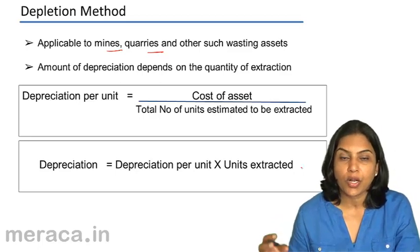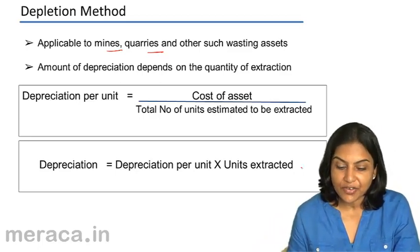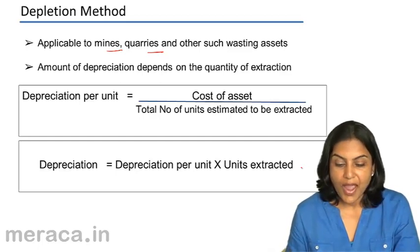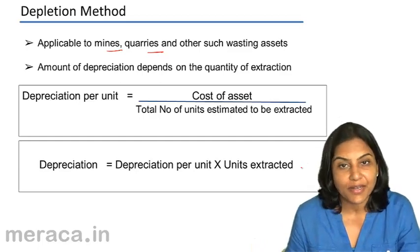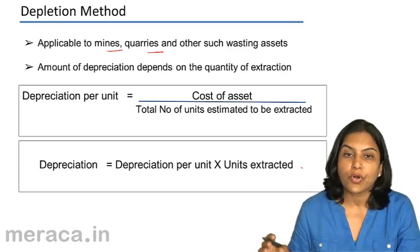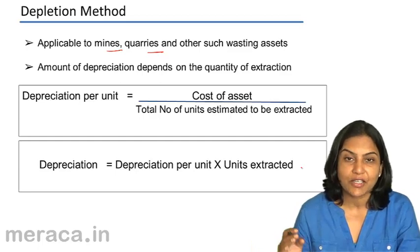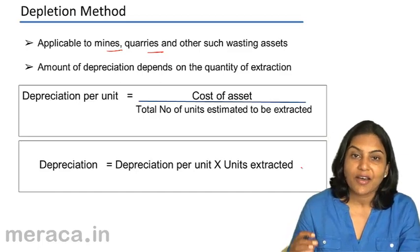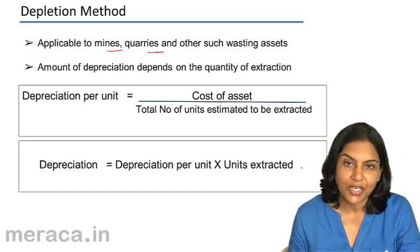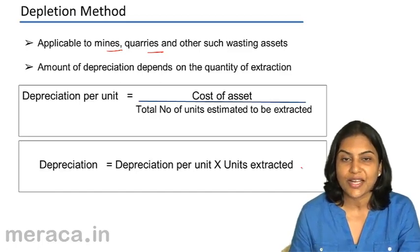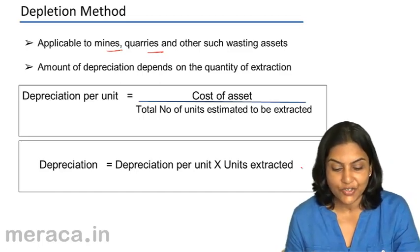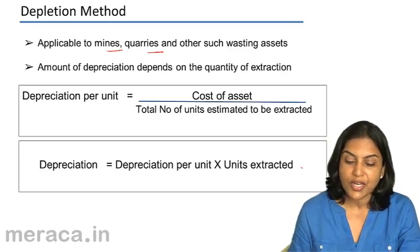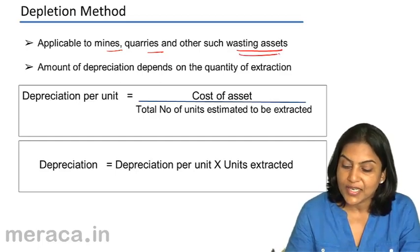Mines are where coal, mineral deposits, etc. are found underground, and there is a limited quantity of the mineral deposit. So the more we extract, the value of the mine actually comes down. Similarly, quarries refer to such mines but largely above the ground, and refer usually to stones like limestone, marble, etc. So the depletion method is largely used in mines, quarries, and other wasting assets.